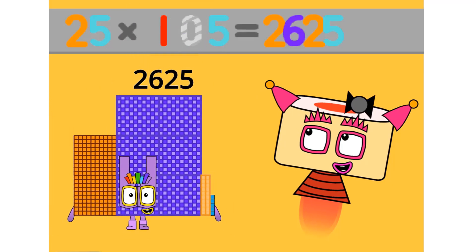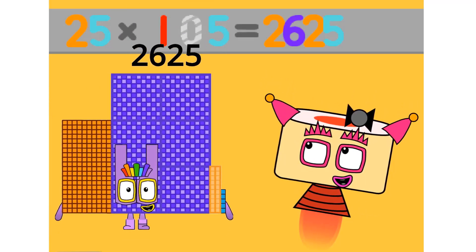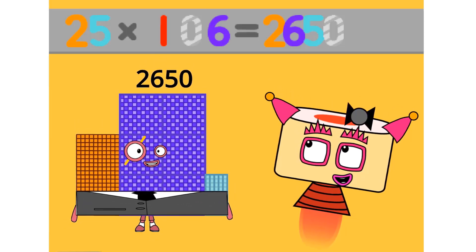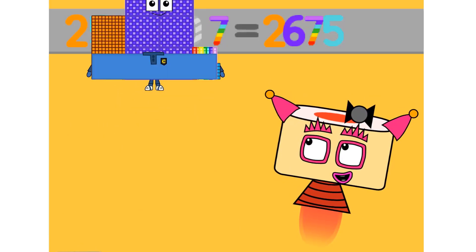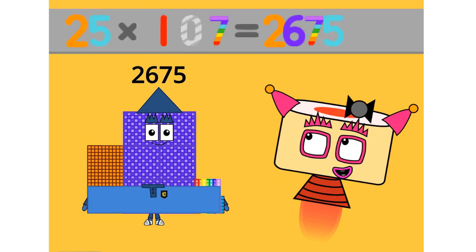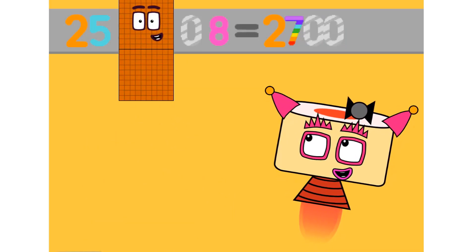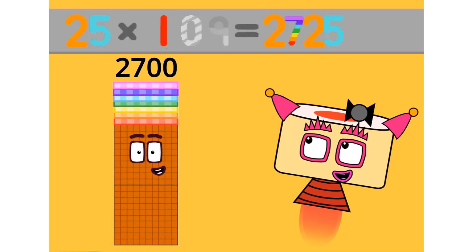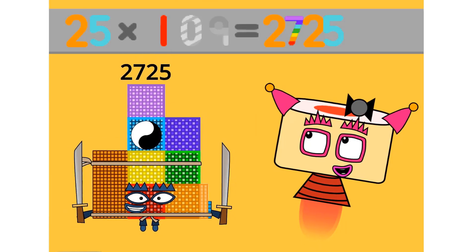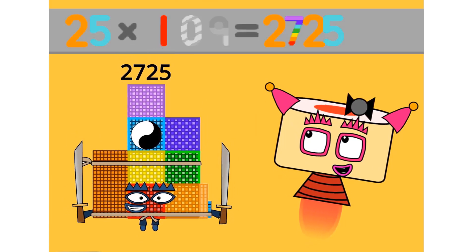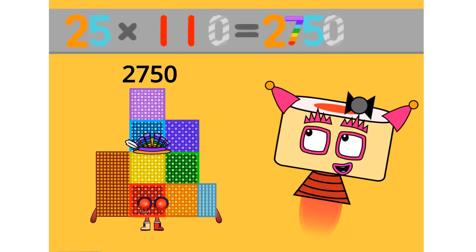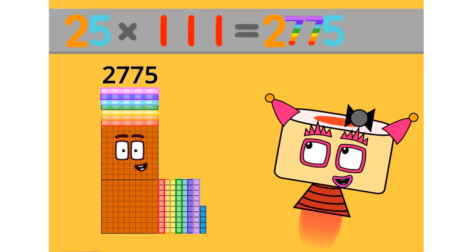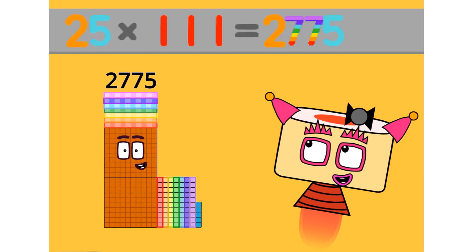25 times 105 equals 2625. 25 times 106 equals 2650. 25 times 107 equals 2675. 25 times 108 equals 2700. 25 times 109 equals 2725. 25 times 110 equals 2750. 25 times 111 equals 2775.